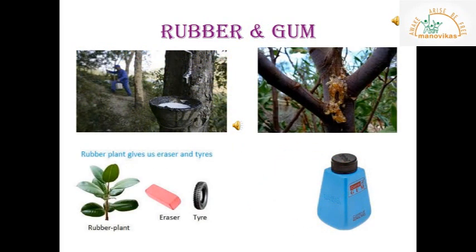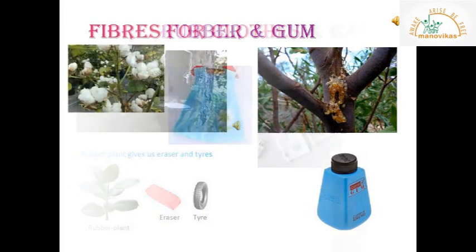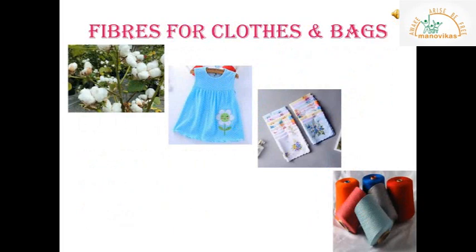Rubber items such as erasers, tires and gloves are obtained from the milky liquid of rubber plants. Gum is obtained from the keeker plant. Cotton cloths are made from cotton fibers obtained from the cotton plant.